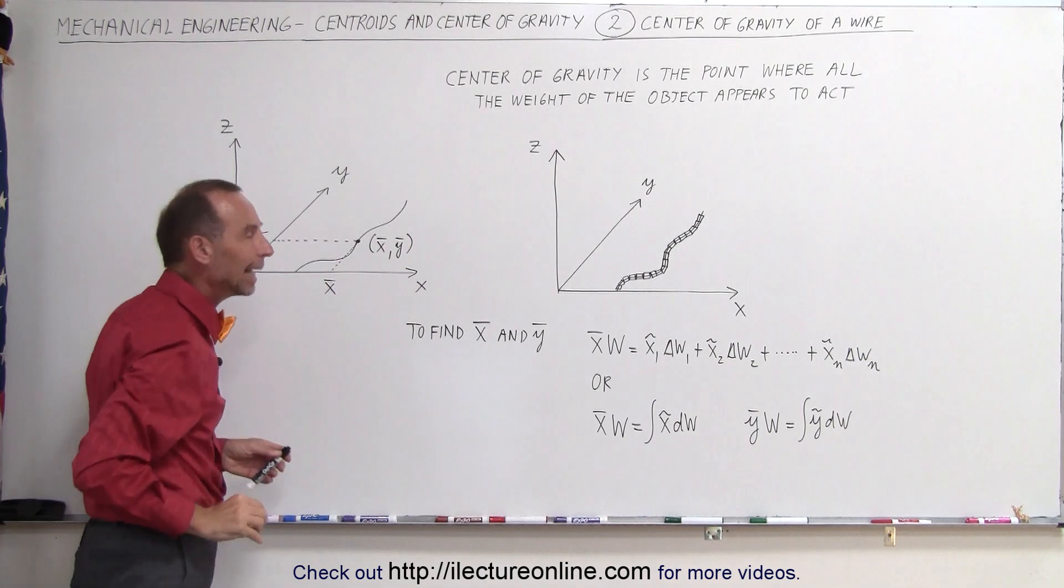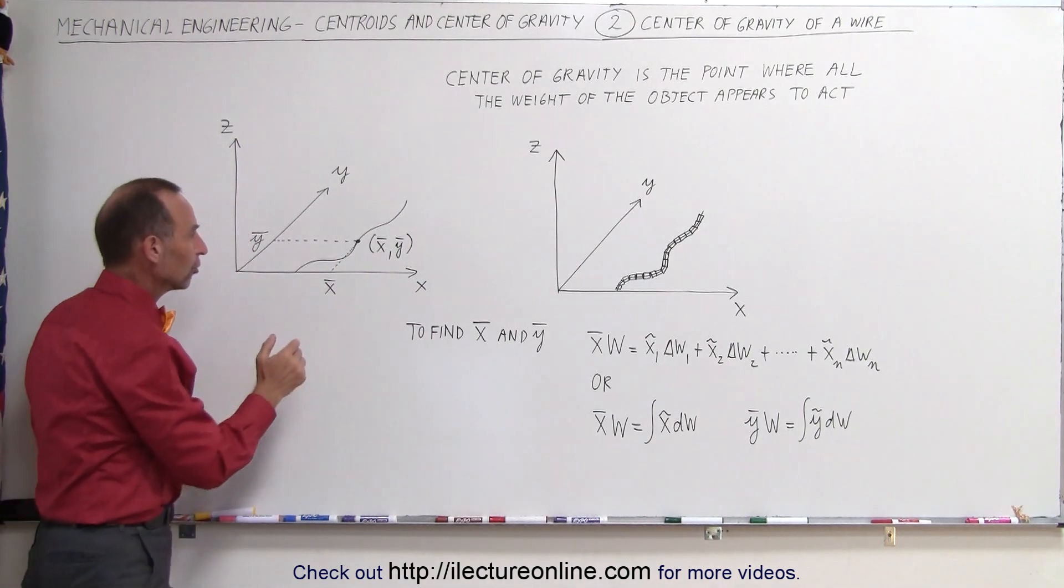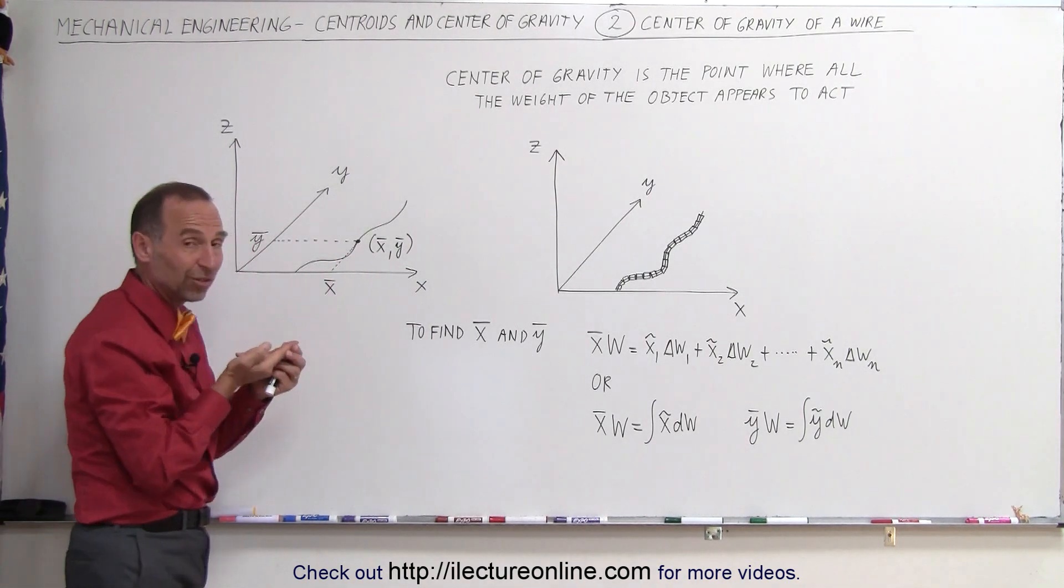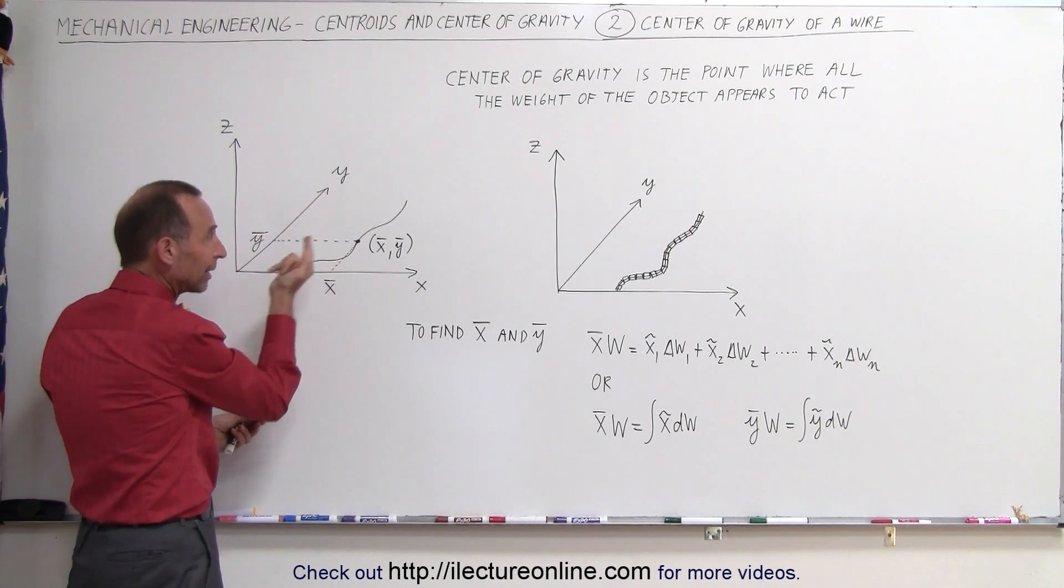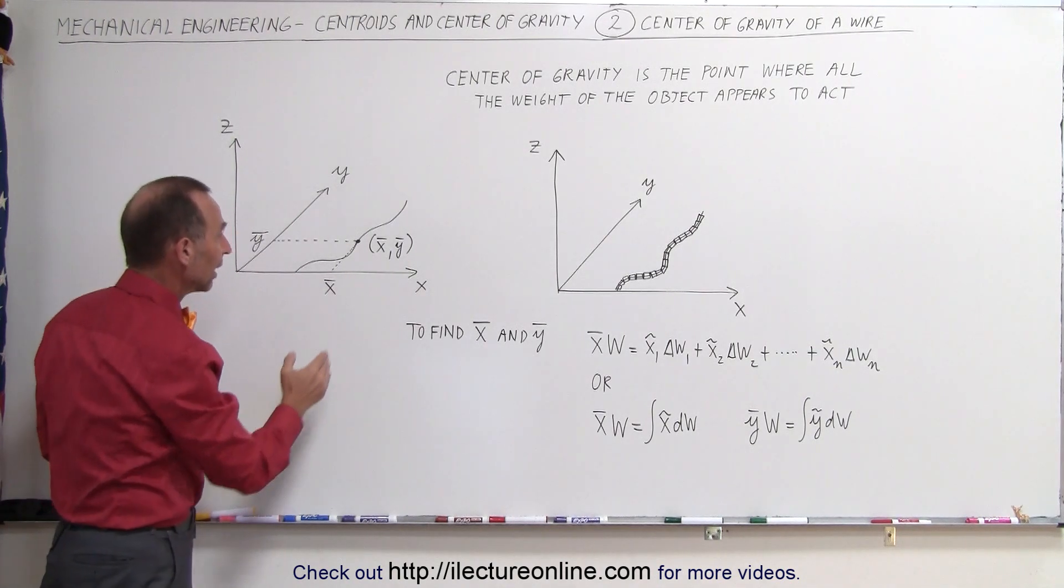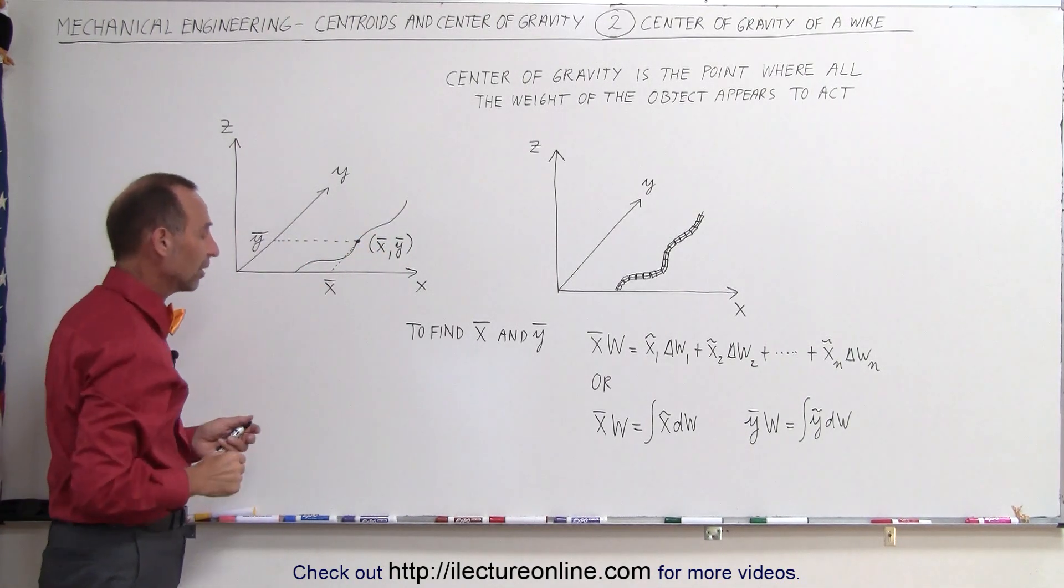Let's say that the wire is positioned in the XY plane and notice there's some point in the wire that if the wire was stiff enough you could balance the whole wire right there at that single point and that would then be the X and the Y coordinate of the center of gravity.